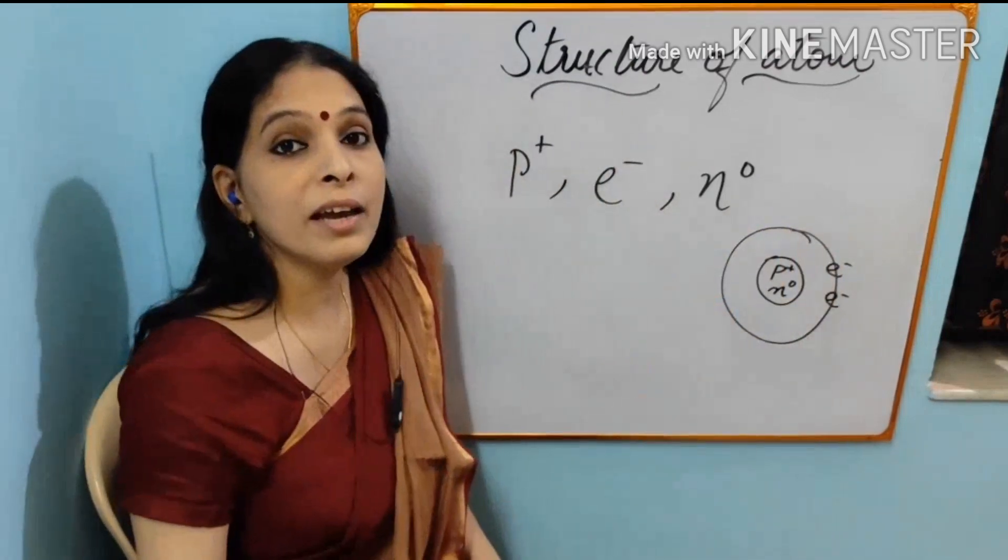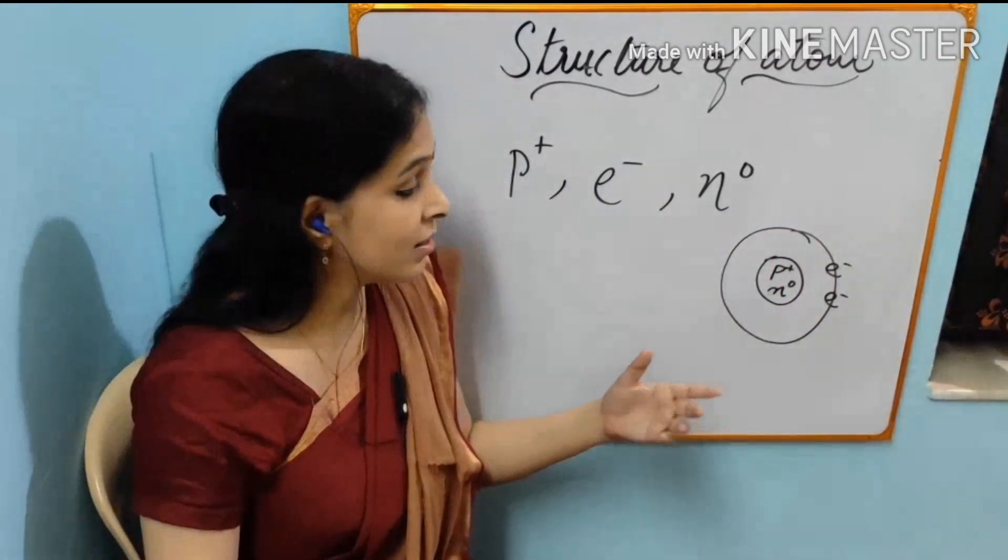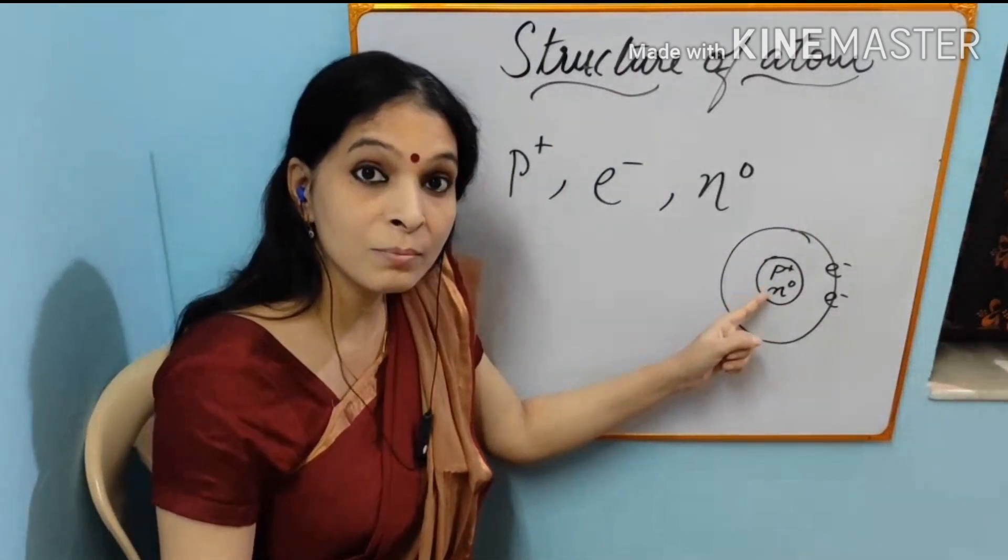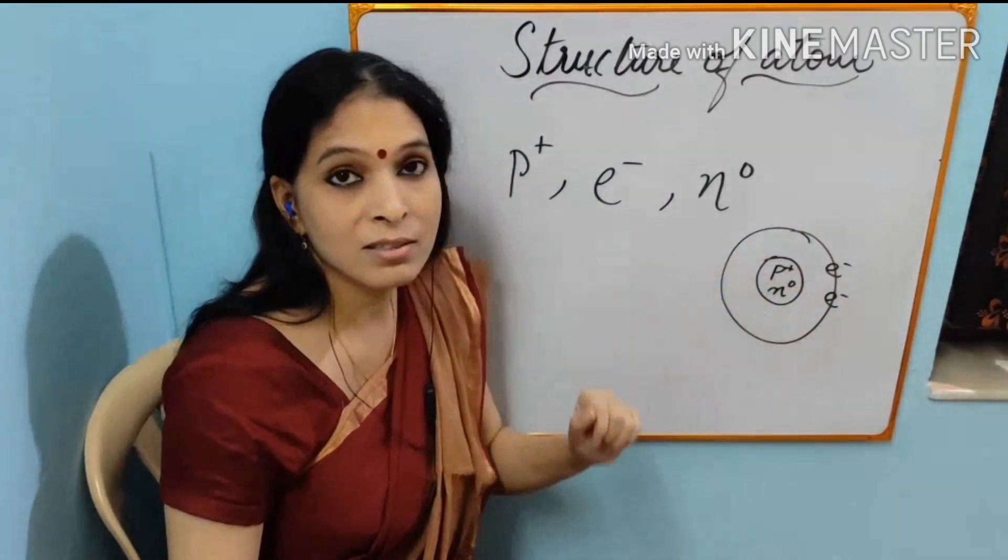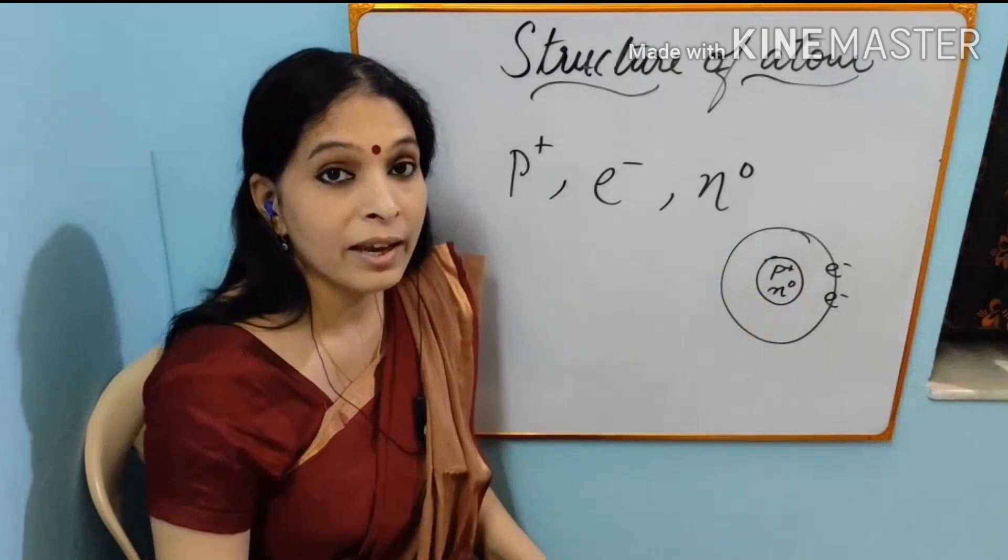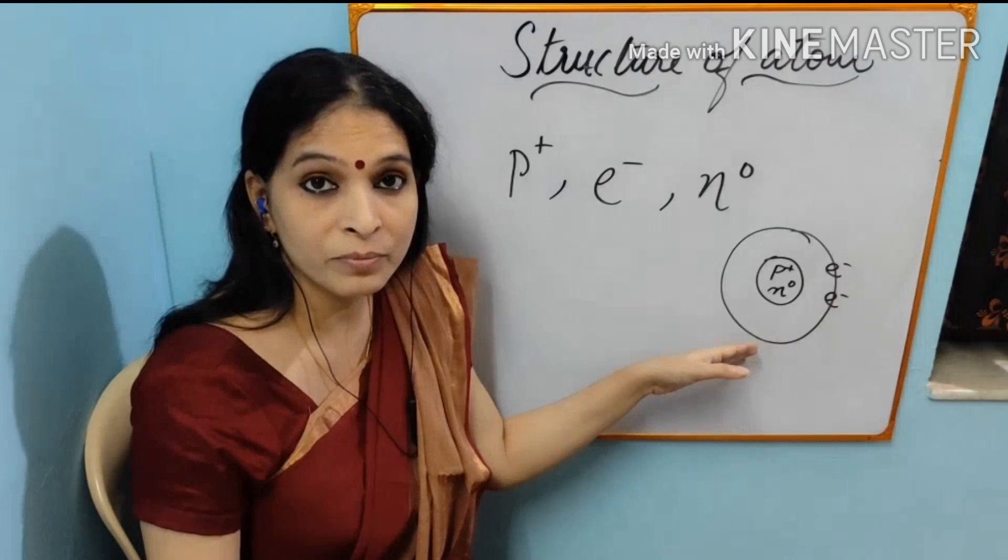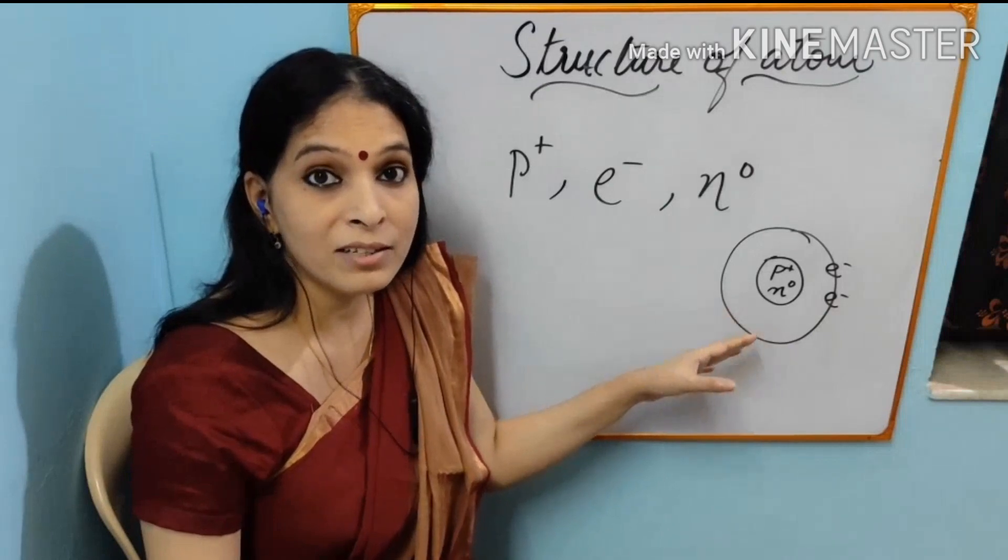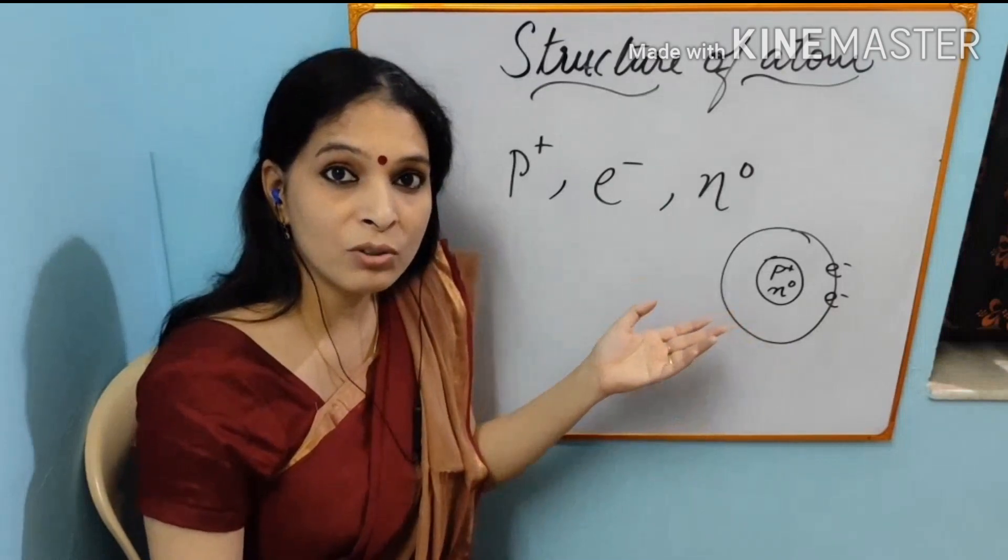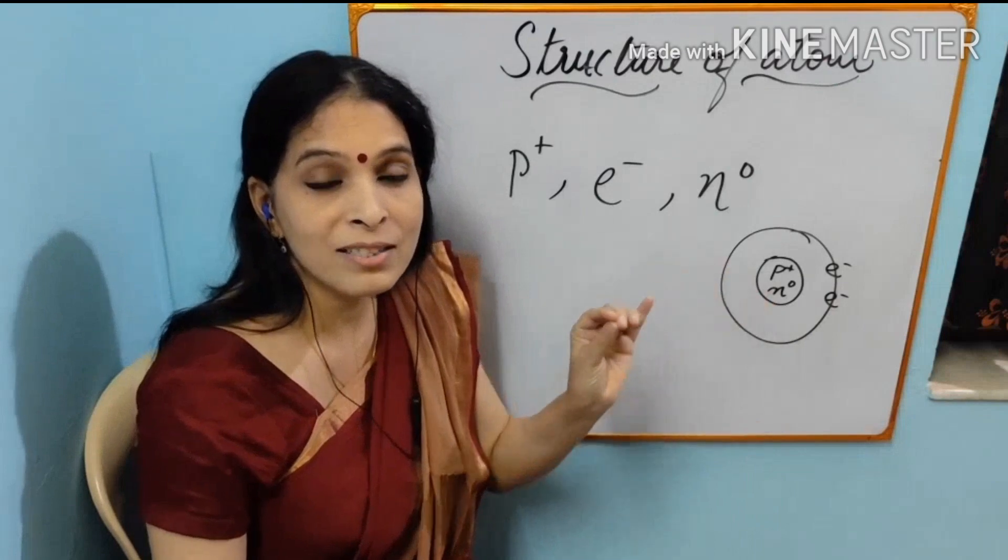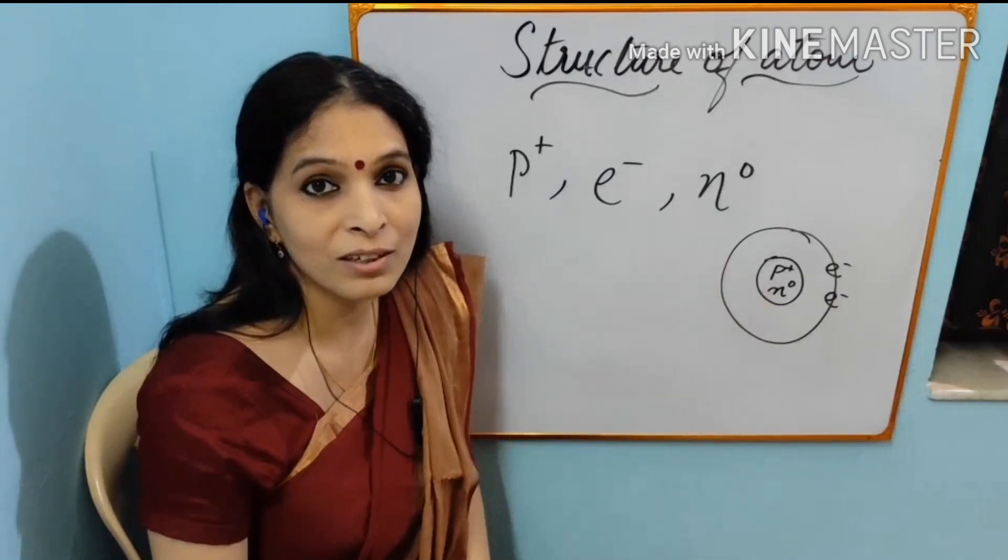And most of the atom's mass is concentrated in this nucleus because electrons mass is negligible. And the size of the nucleus is very small compared to the size of the atom. If we are comparing the atom to a big playground, nucleus is a fly sitting in the center of the ground.